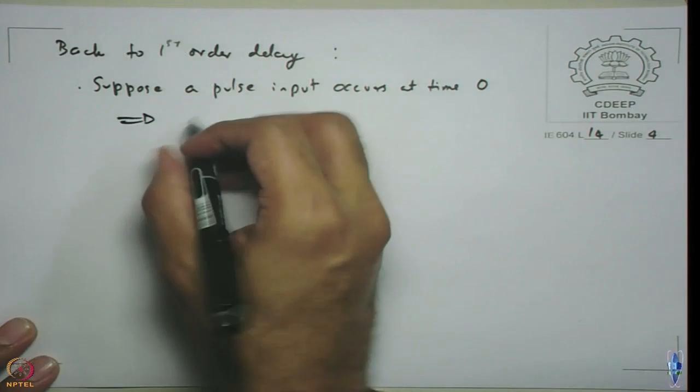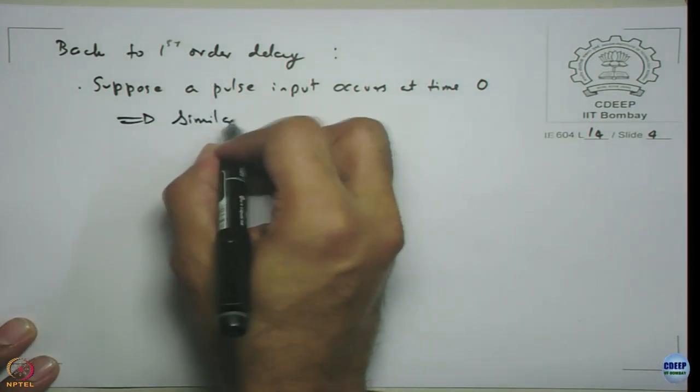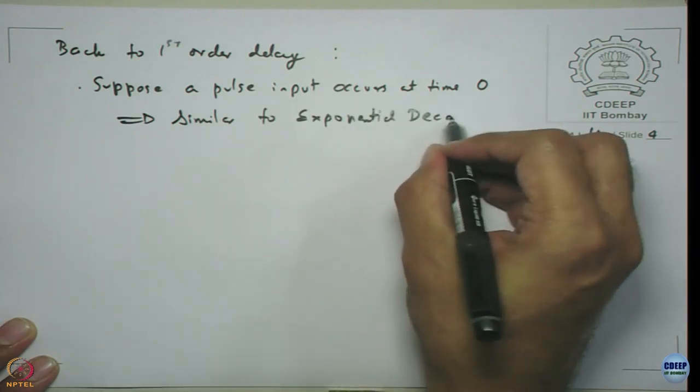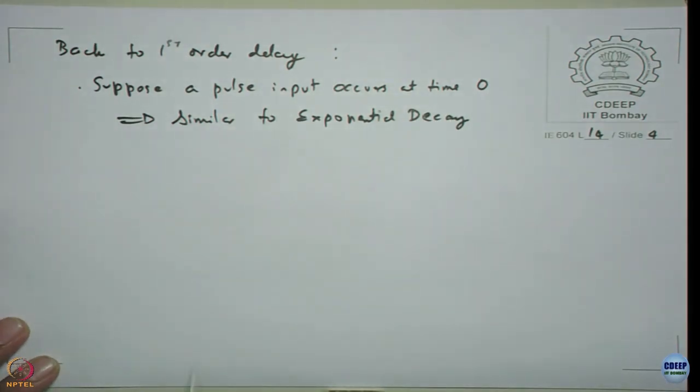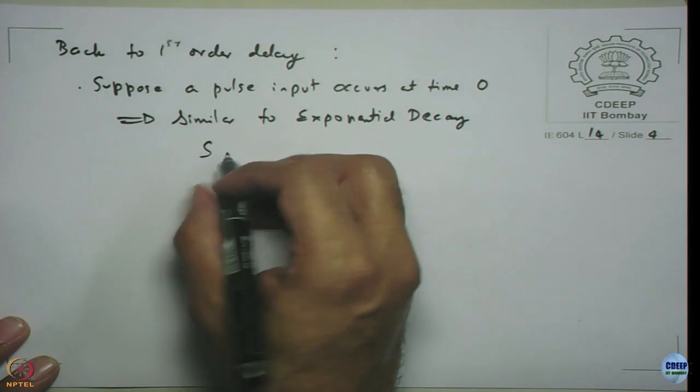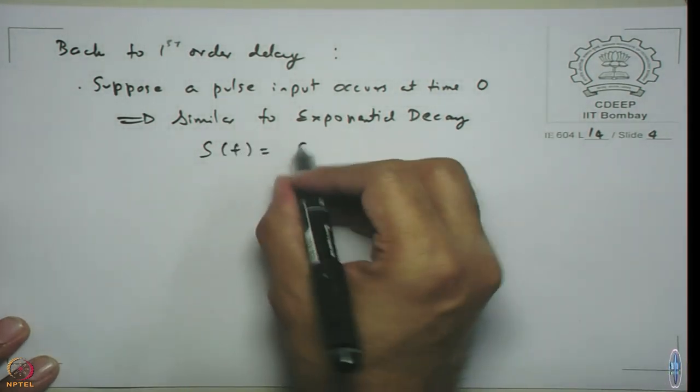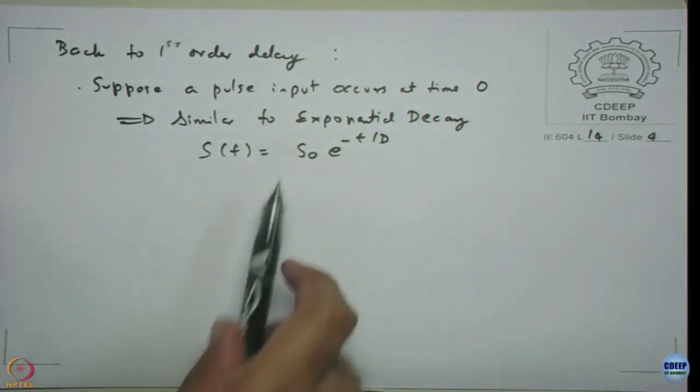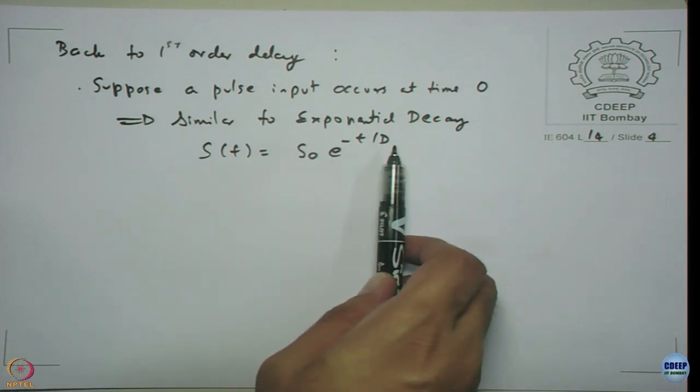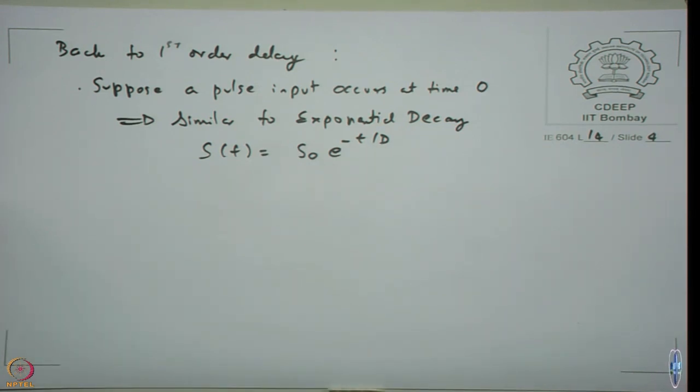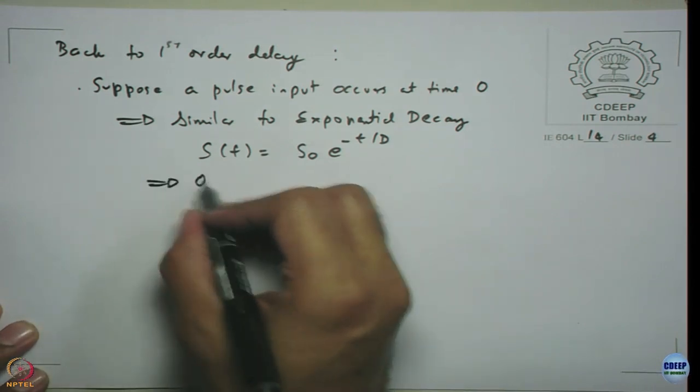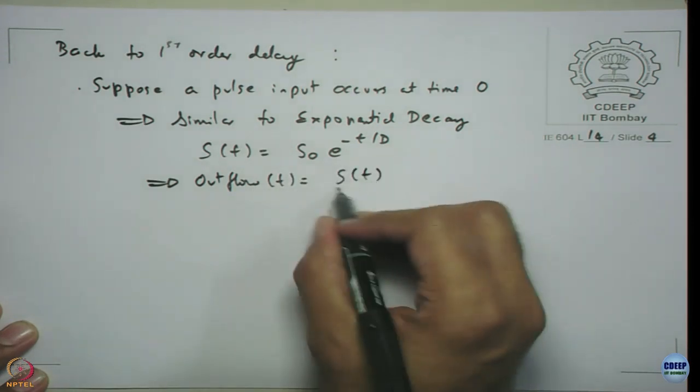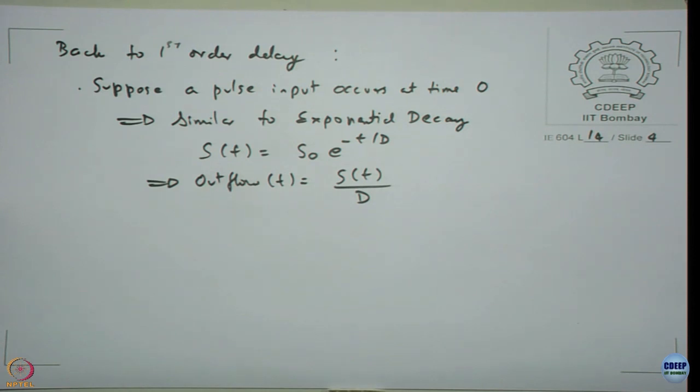This system as I mentioned is similar to exponential decay, where we actually had solved to estimate that stock at time t is equal to s naught e power minus t by D. We have done that. S naught is initial value of stock e power minus t by D that will give you exponential curve. This means that your outflow at time t is nothing but s of t by D. We already know this equation.